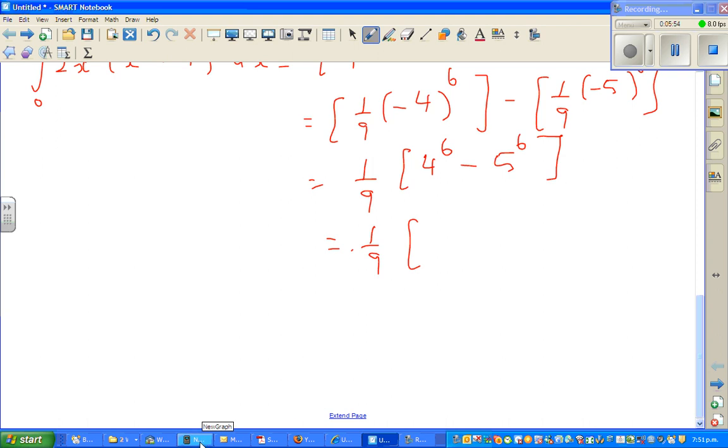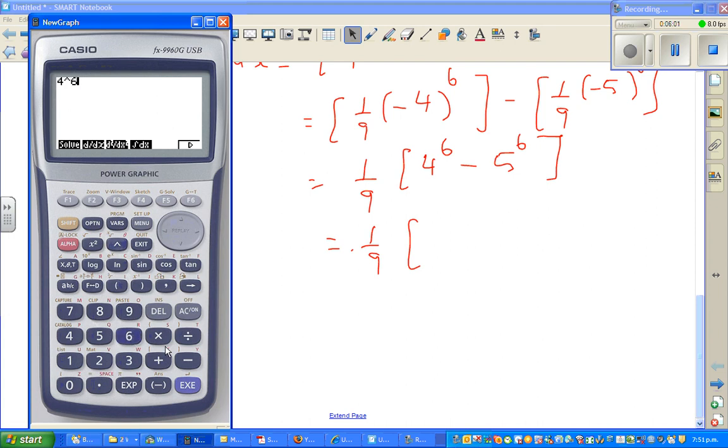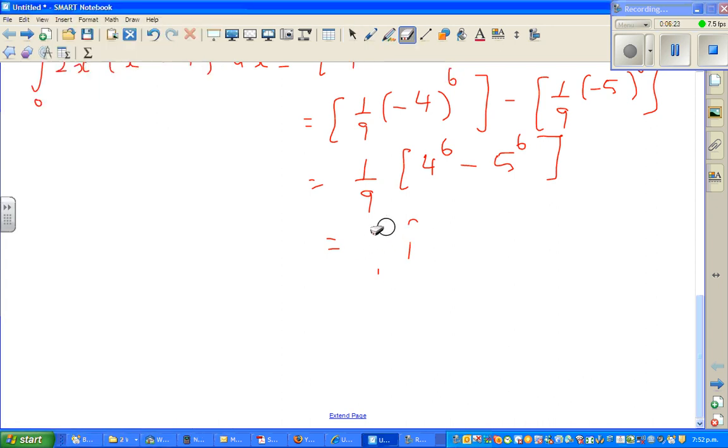So this is nothing but 1/9th times. So let me use a calculator. So I'll do 4 to the power 6 minus 5 to the power 6, which is this number, and then divide by 9, which is minus 1291. So I'll finally write the answer is minus 1281. I'll remove this step.